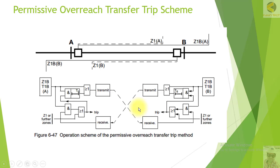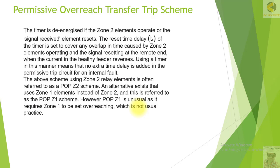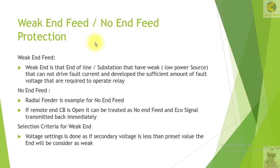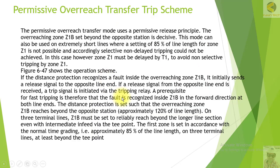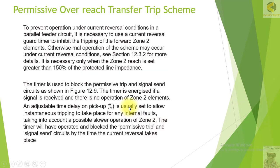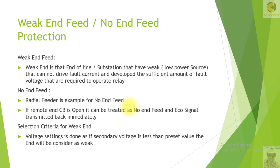These are some examples of permissive overreach transfer schemes that we have studied, and this is the logic diagram that we have understood. I hope you enjoy this training so far, and we will move to our new topic, which is weak infeed and no feed protection. Thank you very much.